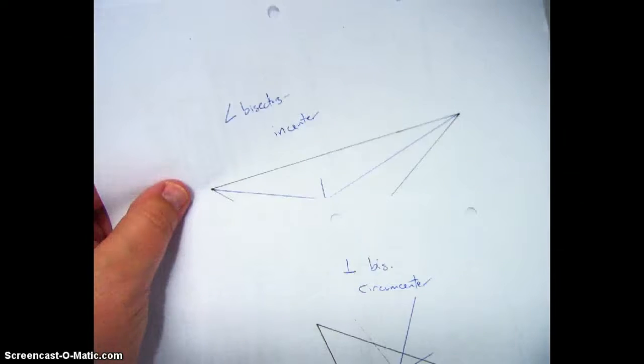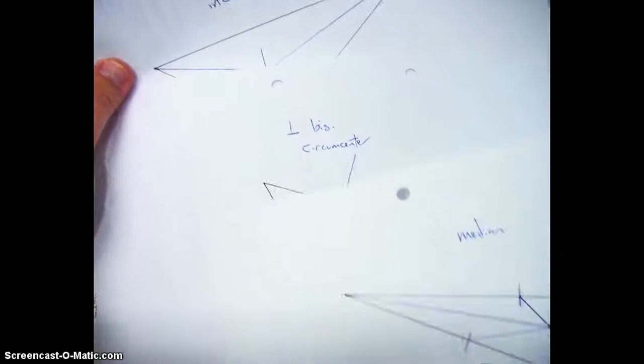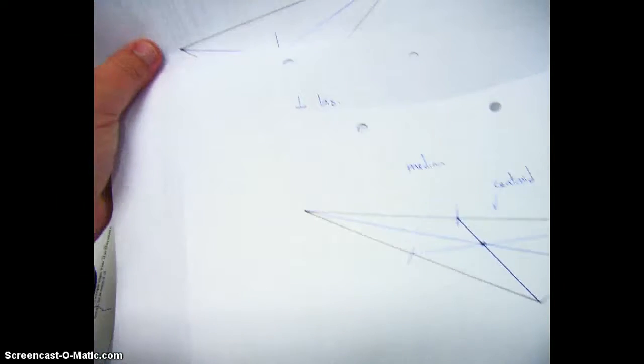So now we have all these centers. We have altitudes. We have orthocenters. We have incenters, angle bisectors, circumcenters, perpendicular bisectors, and medians and centroids. It's a lot of vocabulary. And honestly, to make this video, I had to cheat. I had to look and see which one was which so I didn't mess it up.